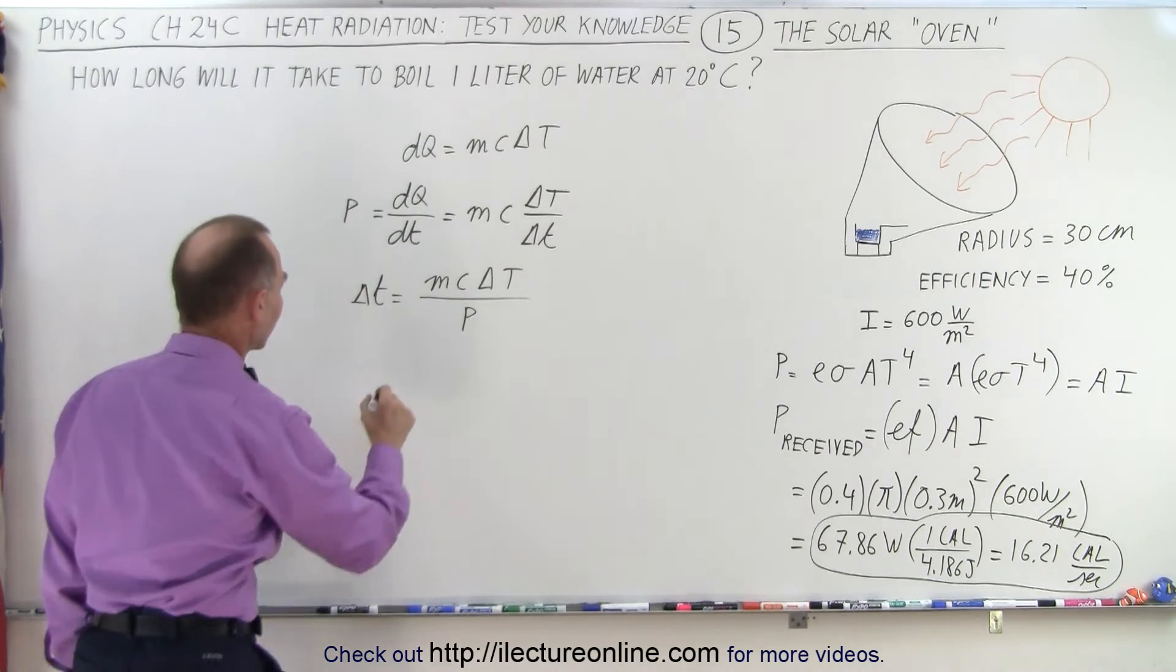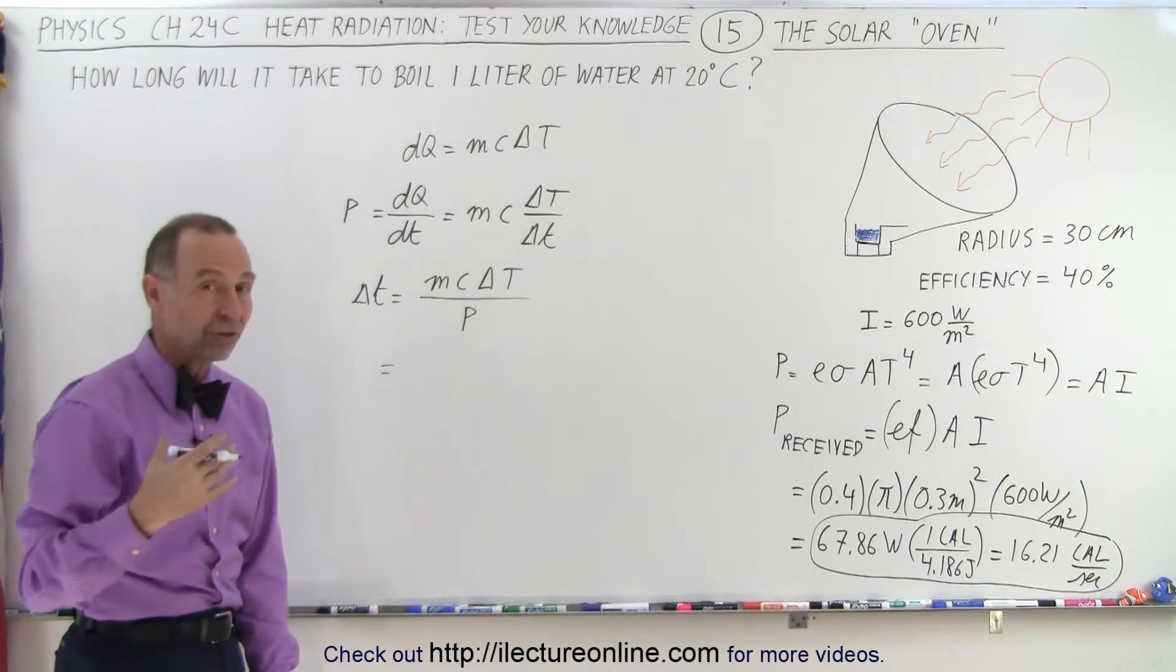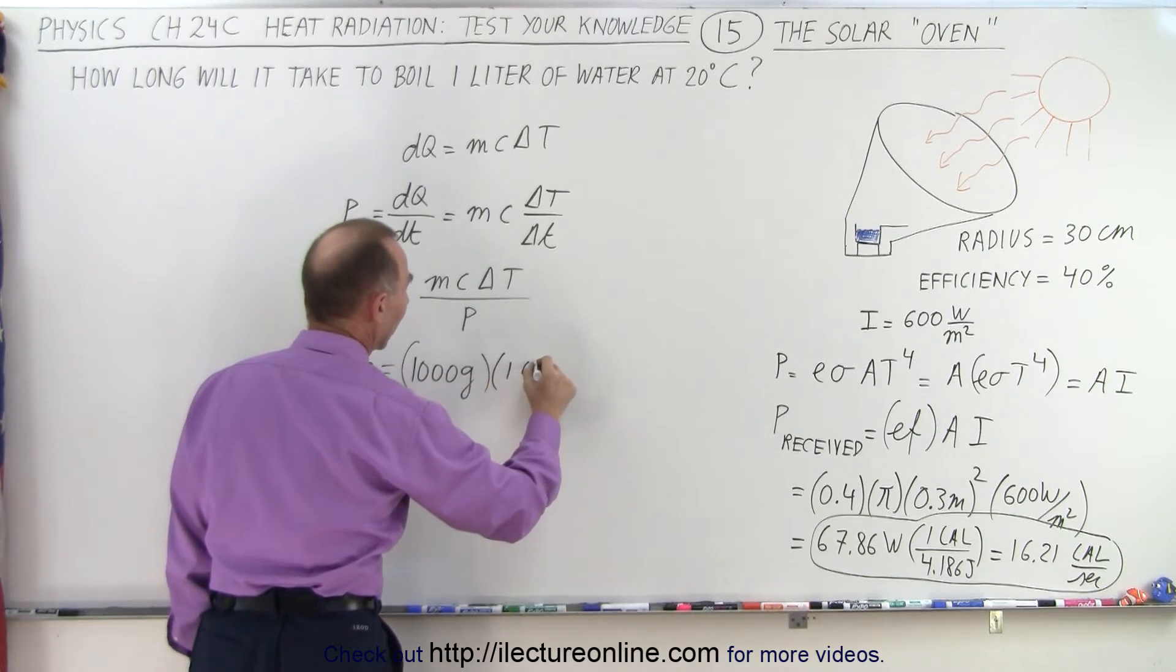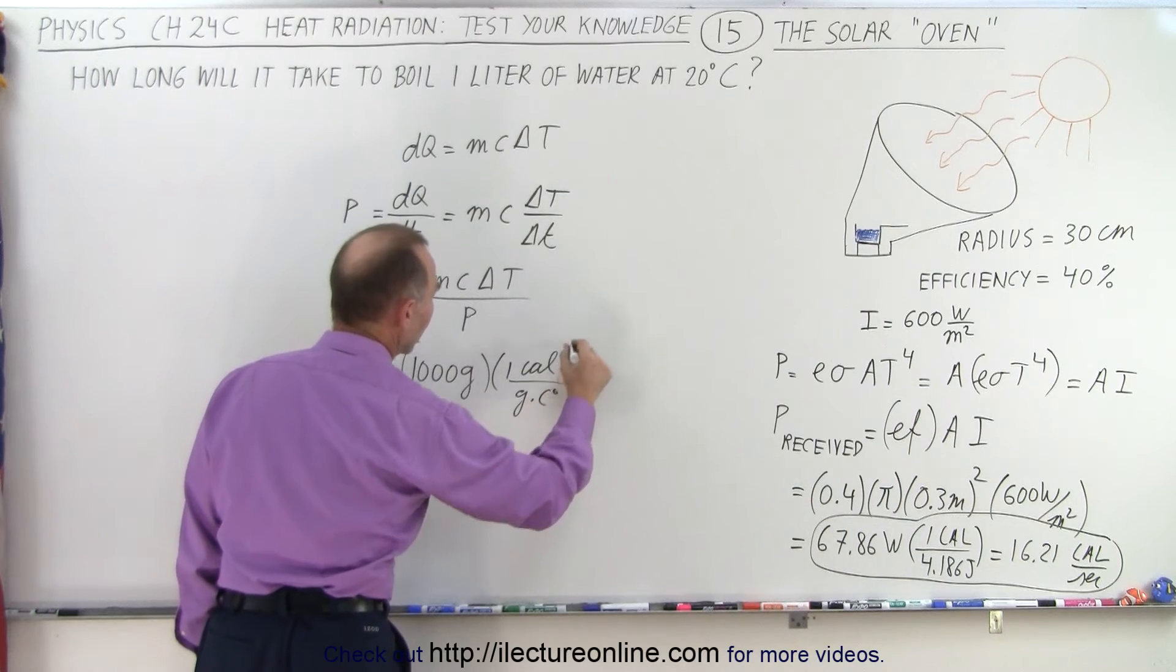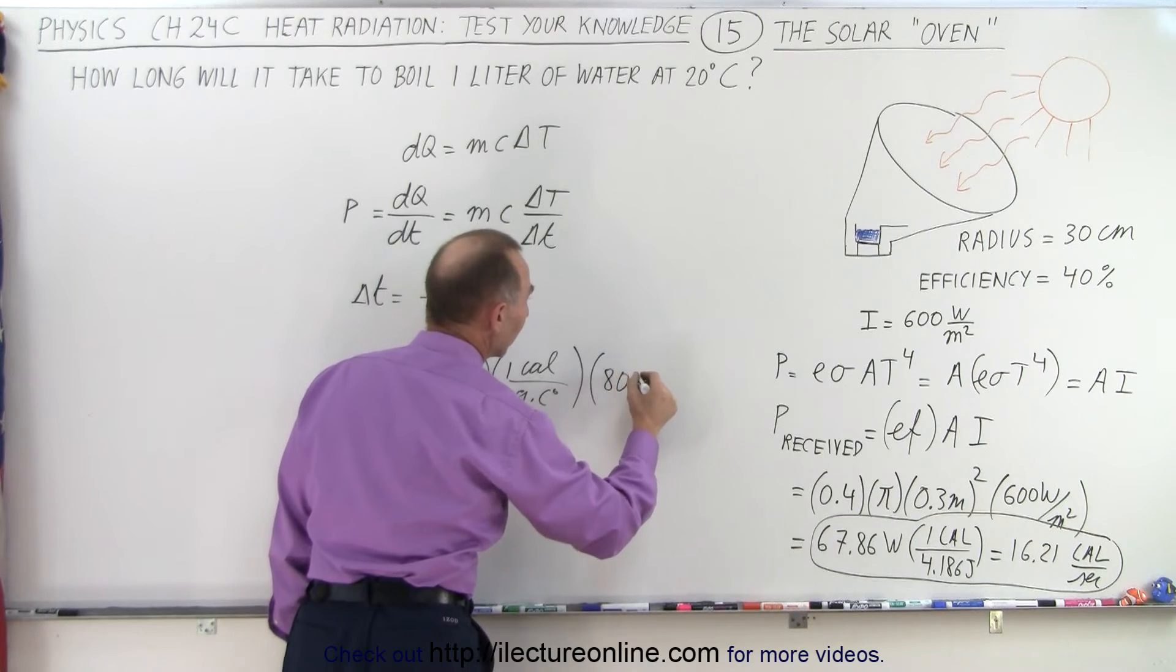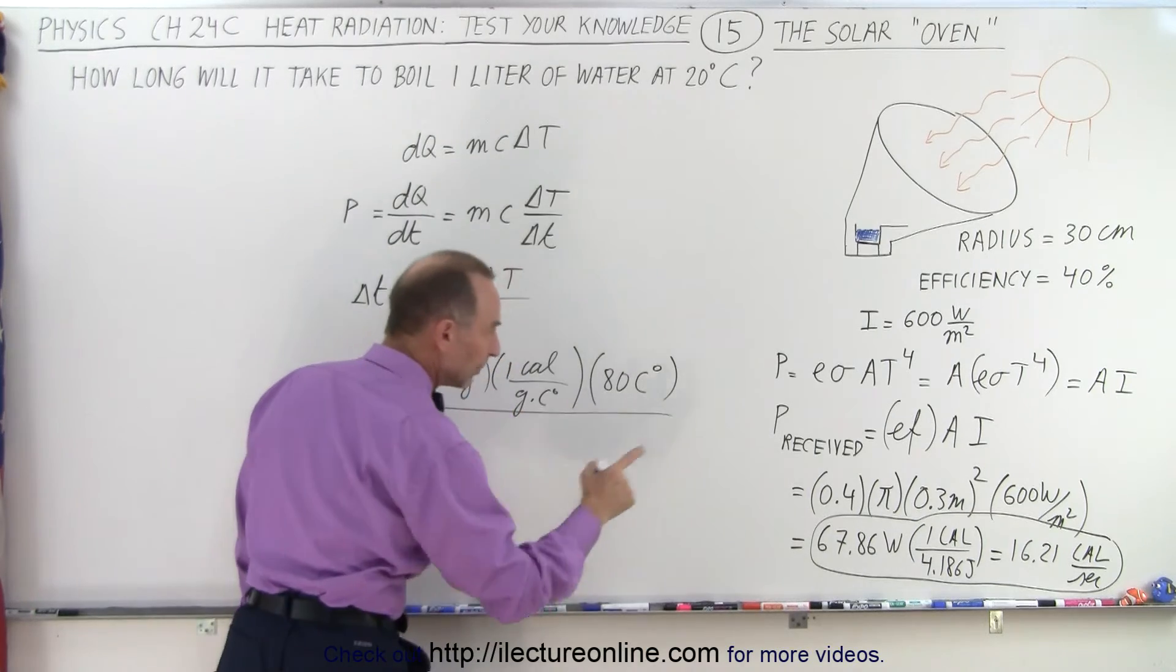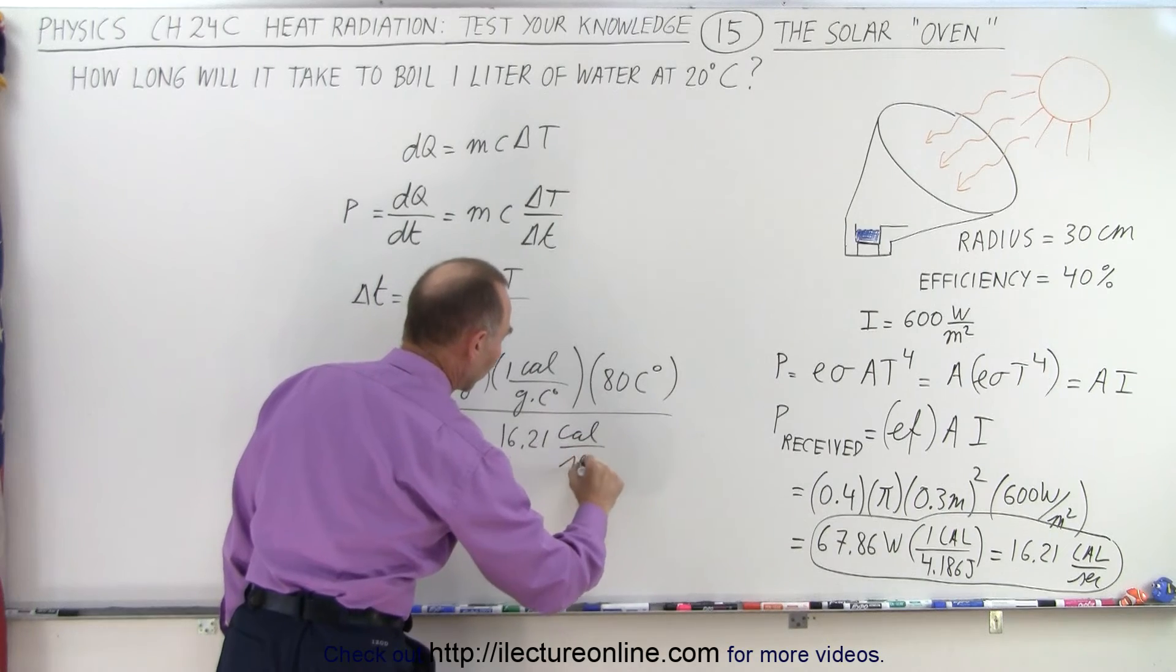And now we're ready to solve the equation and to solve for the time it takes to boil that water, one liter of water. This is equal to one liter of water has a mass of a thousand grams. That's one kilogram. So one thousand grams is the mass of one liter of water times c, which is one calorie per gram per centigrade degree. The delta T, well, we go from 20 to 100, that's 80 centigrade degrees. And then we divide the whole thing by the power input, which is 16.21 calories per second.